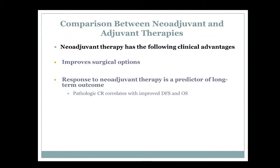So why do we do neoadjuvant? There are advantages. First, it improves surgical options — you may shrink the tumor and allow a much smaller lumpectomy instead of mastectomy. More importantly, you can actually see in real time whether the tumor responds to chemo. The response to neoadjuvant is a predictor of long-term outcome.